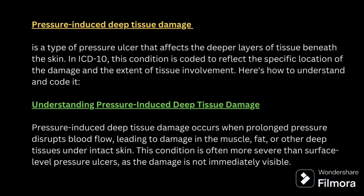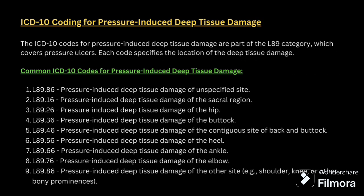Next, pressure-induced deep tissue damage — that is, the deepest layer of the skin is getting affected. At the place of stage, you will assign 6. For pressure ulcer deep tissue damage, the sixth character should be 6. You can see the code series — all the sixth characters will be listed as 6. If you put 6 at the place of stage, that indicates deep tissue damage.